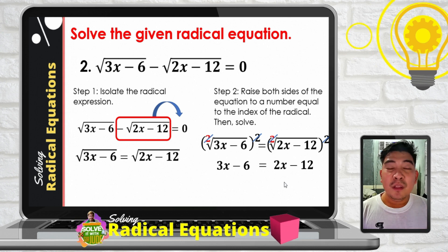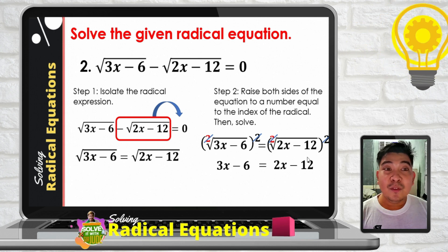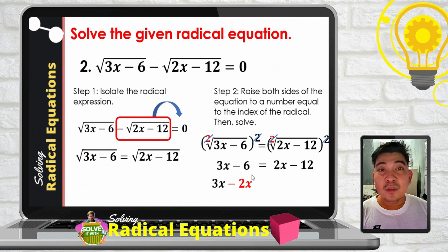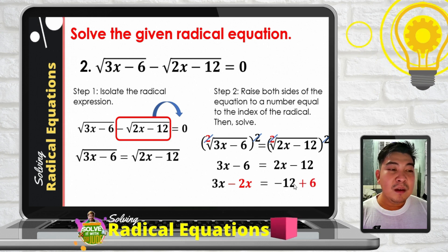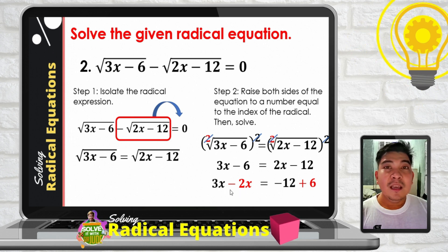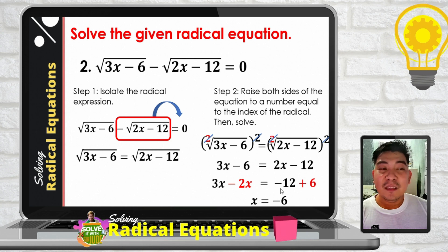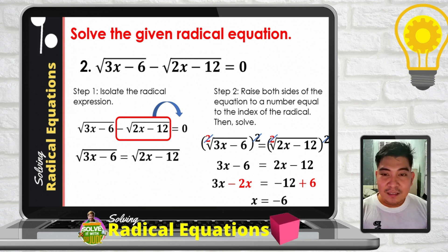Applying the addition property of equality, we transpose 2x to the left and negative 6 to the right. When transposing, the sign changes: positive 2x becomes negative 2x, and negative 6 becomes positive 6. Simplifying: 3x minus 2x gives x, and negative 12 plus 6 gives negative 6. So x equals negative 6.